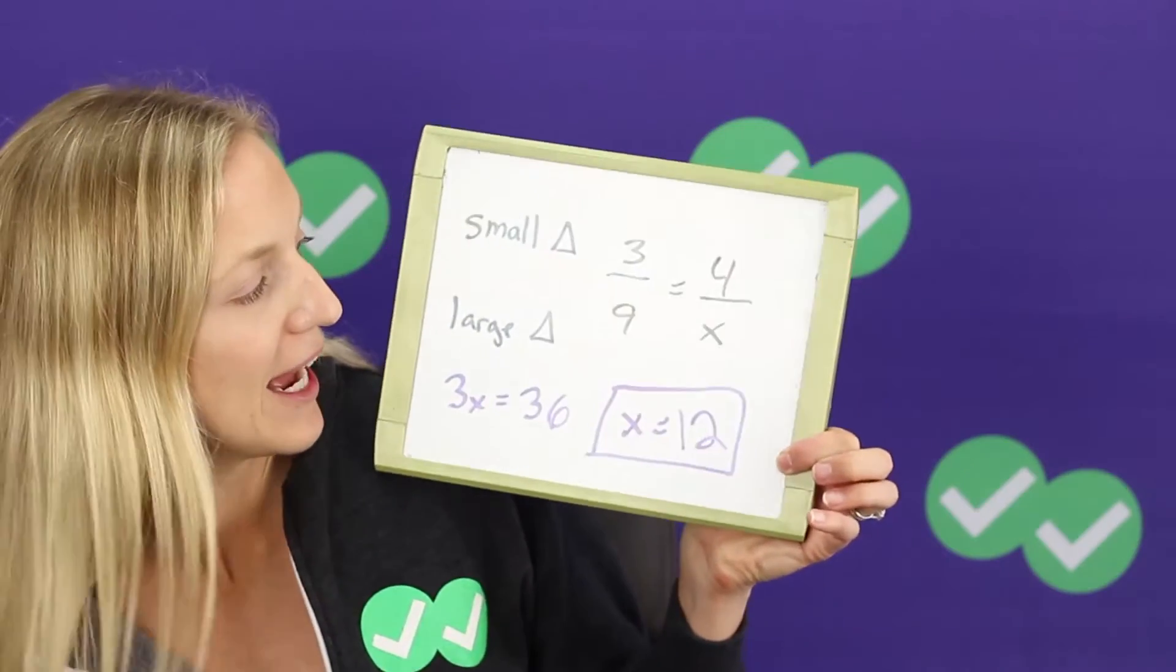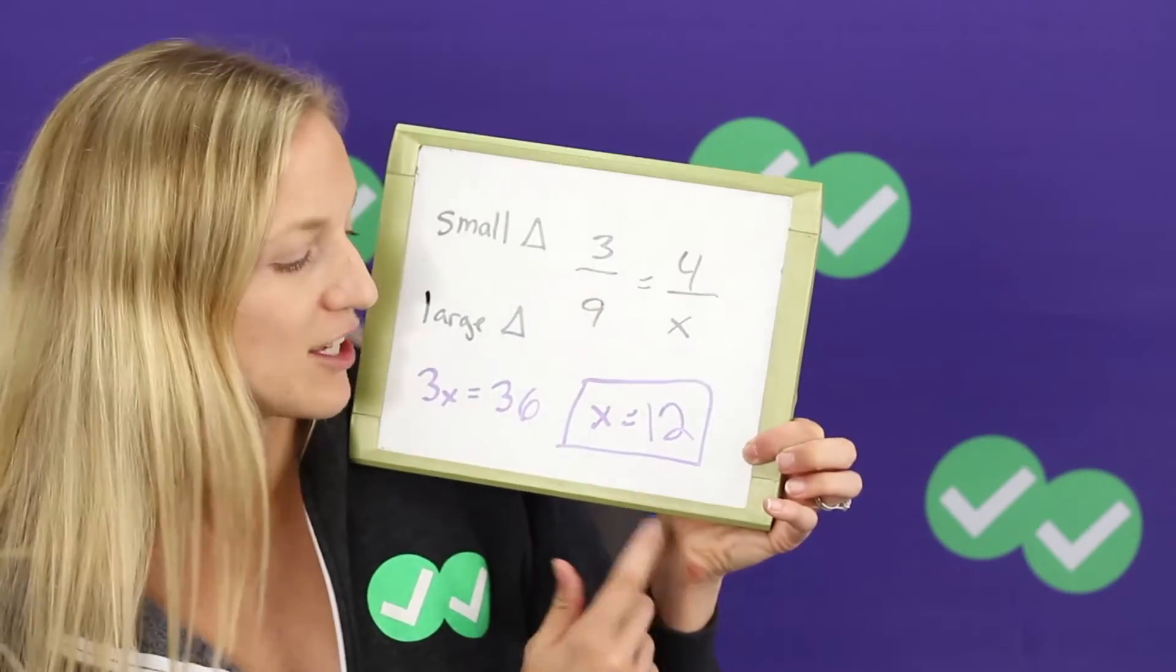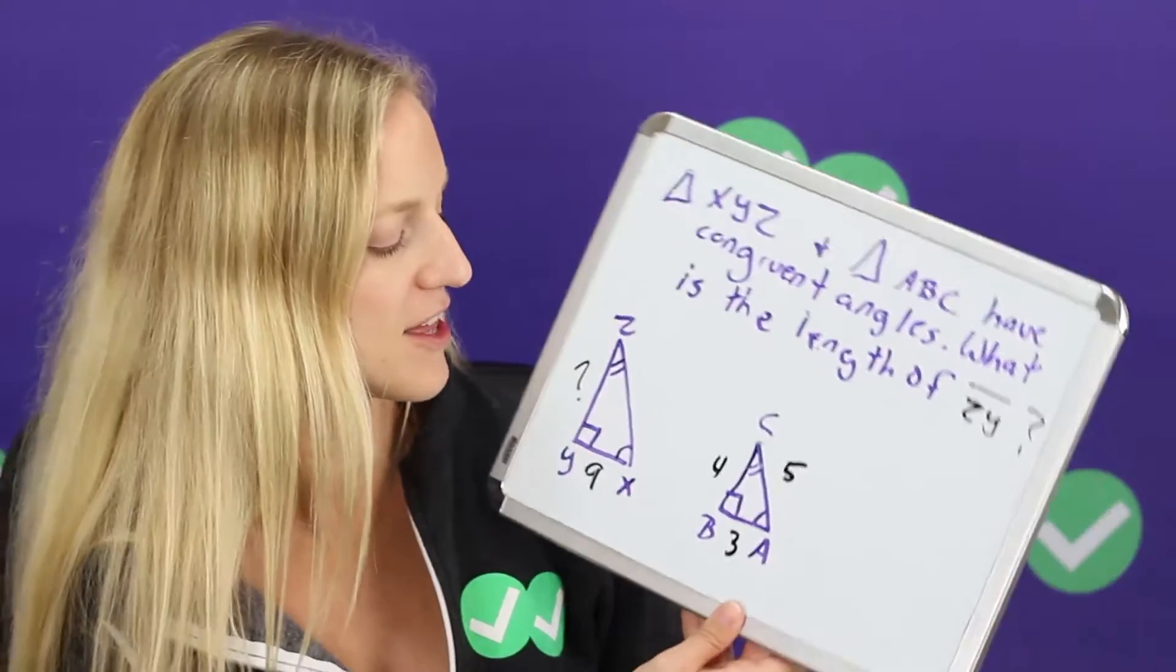Now I'm going to cross multiply and we get 3x equals 36. Solving that we get x equals 12. So that is the length of this side.